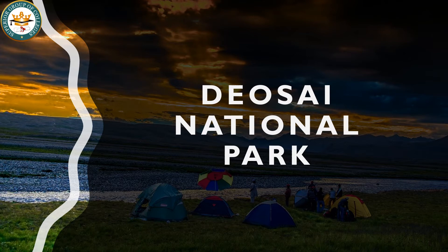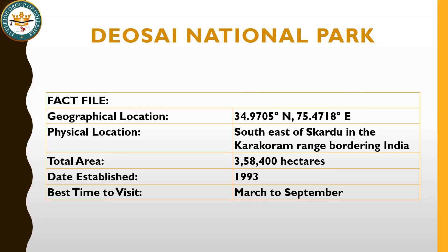Next, we have Deosai National Park, also located in Pakistan's northern areas in Gilgit-Baltistan. Deosai National Park is in the Skardu district in the Karakoram Range. We have a cold desert in Skardu. This park was specifically built for brown bear conservation. The area is 358,400 hectares and it was established in 1993. March to September is the best time to visit Deosai National Park.